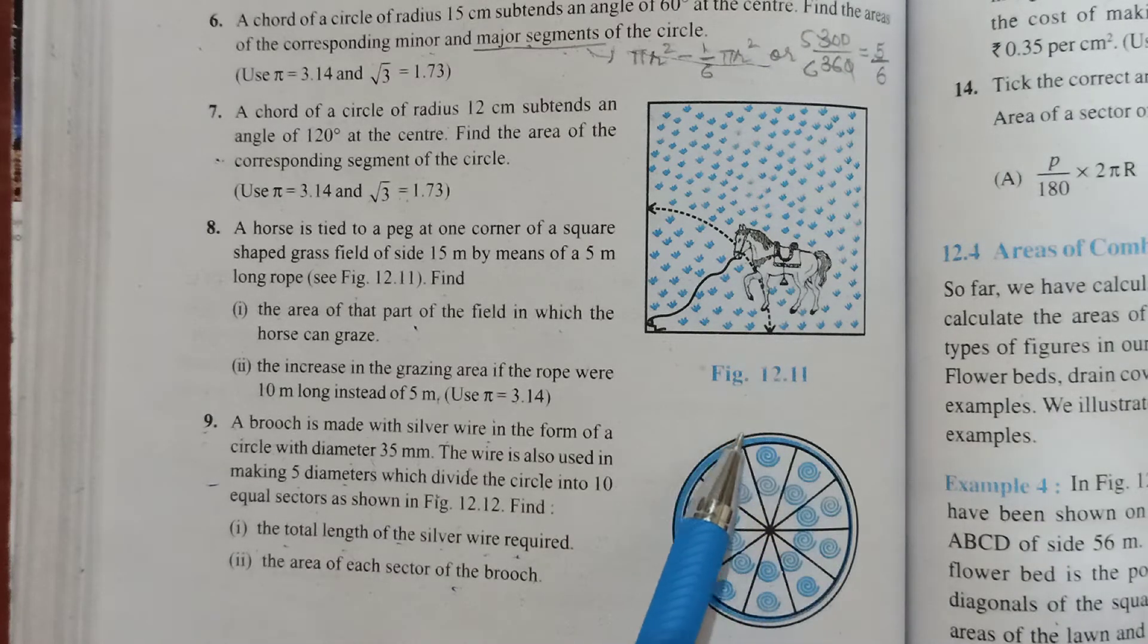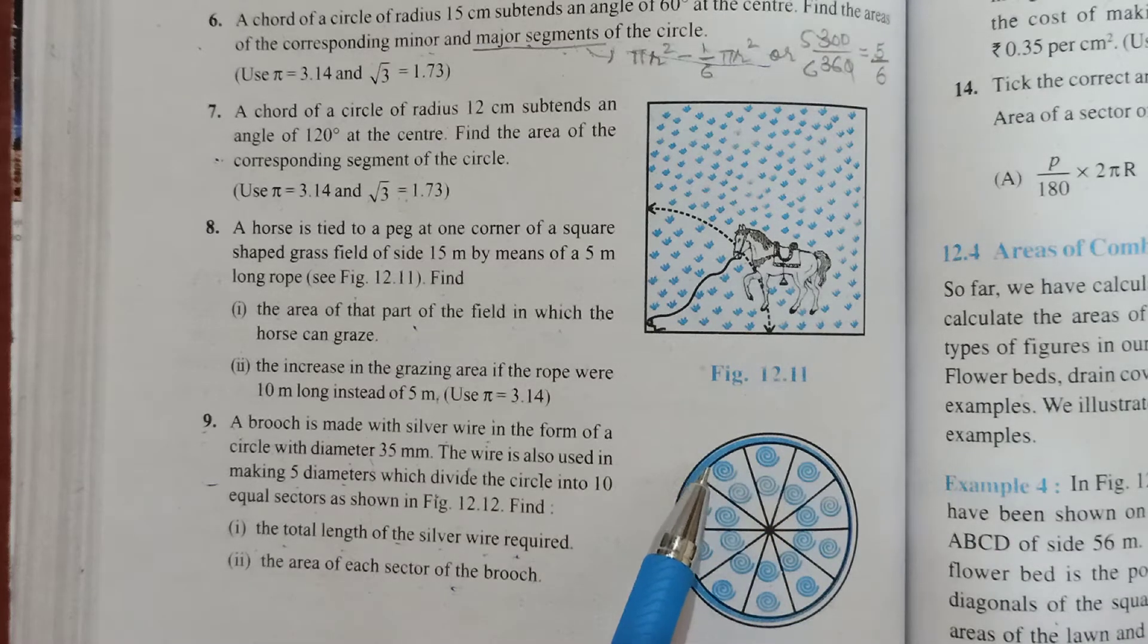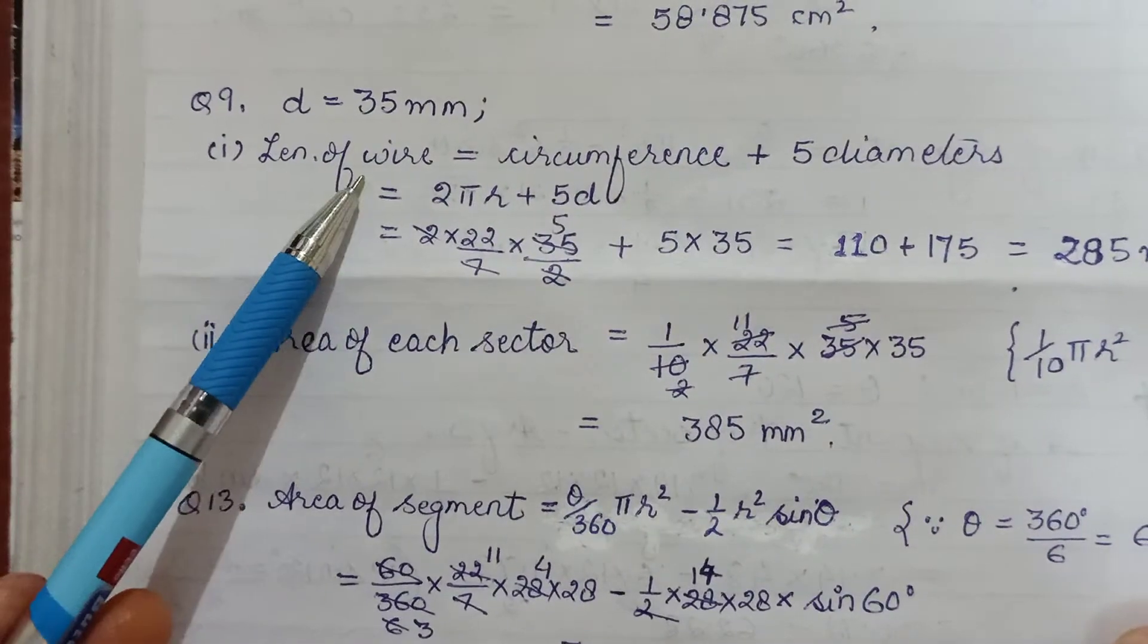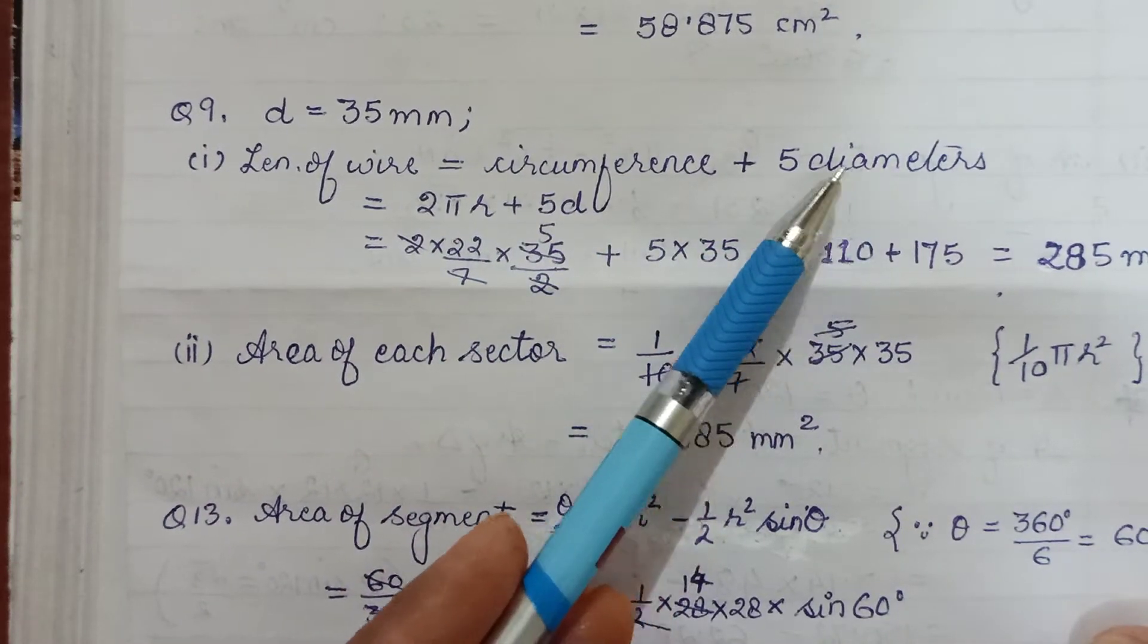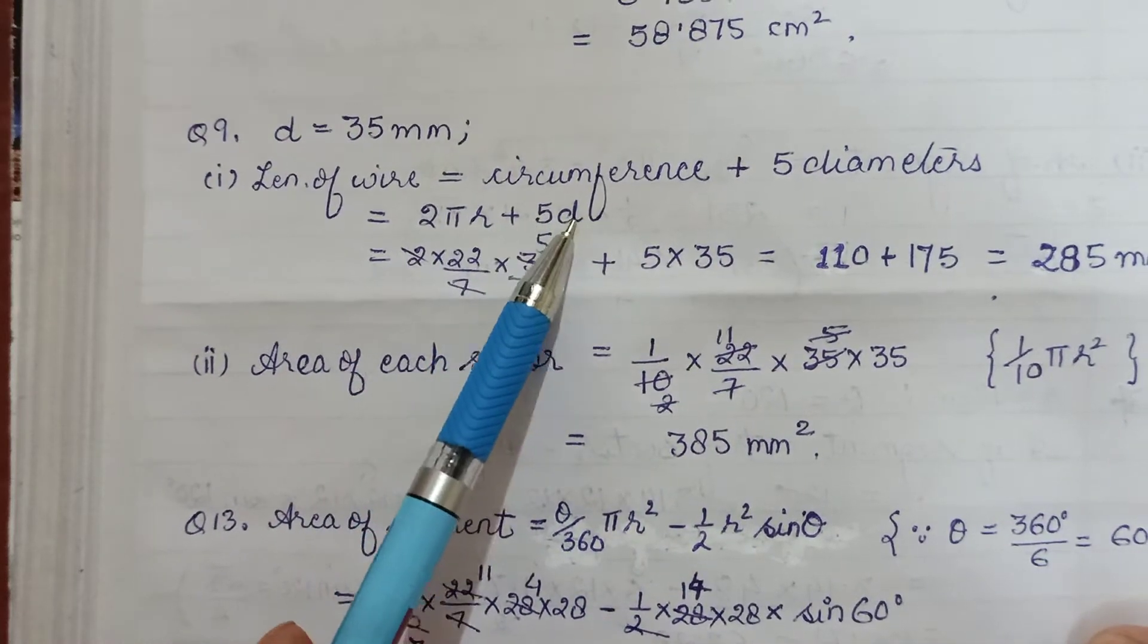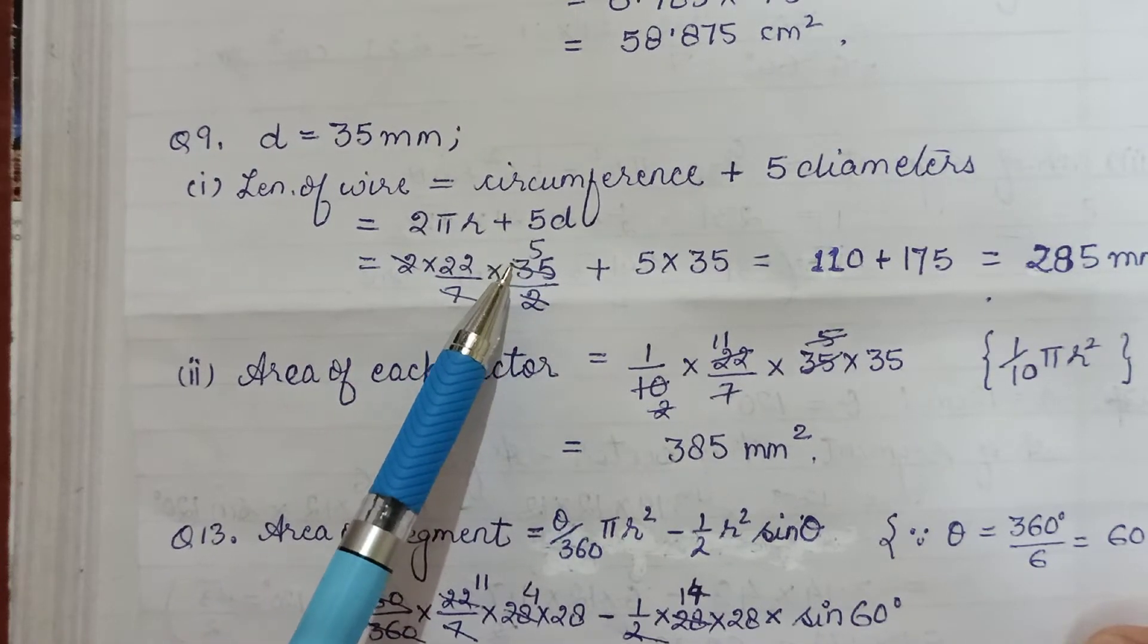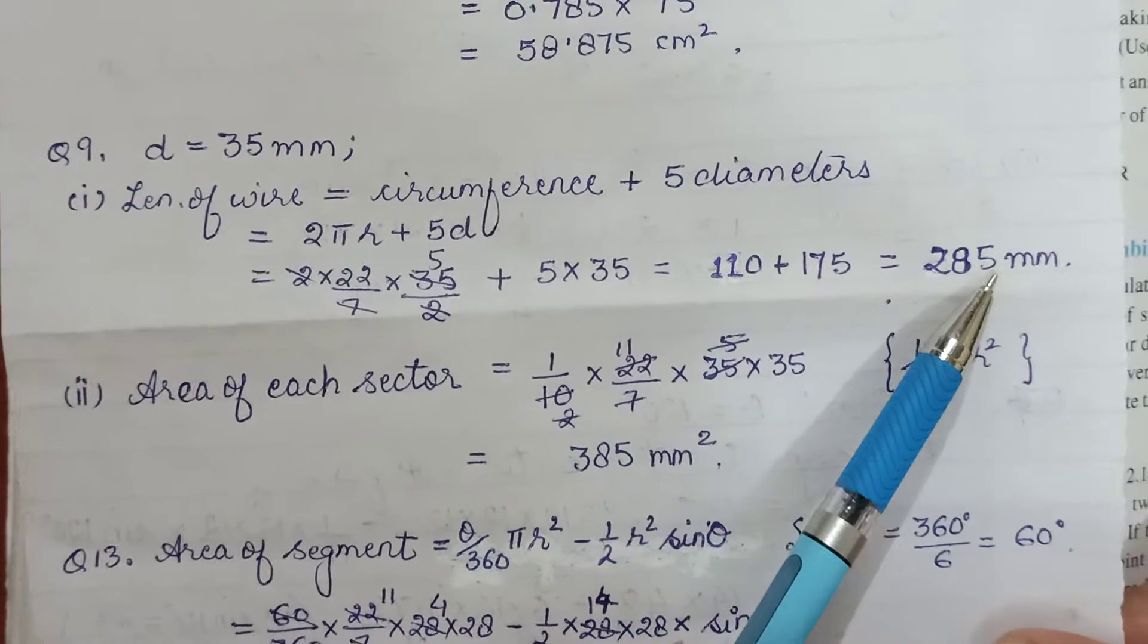They've given you the figure also. With silver wire we're making this circle, so wire will be required for the circle's circumference 2πr, and also there are 5 such diameters. The length of silver wire required would be circumference plus 5 diameters. That's 2πr + 5d. Diameter was 35 mm, so 5×35, and for r you have to take half: 35/2. Calculate it, so this would be the length of wire required.